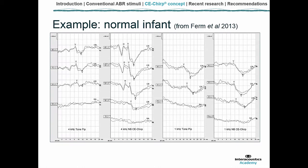Looking at what this means in actual testing: on the left panel you can see results from 4 kHz tone PIPs and 4 kHz chirps. The difference in amplitudes is immediately clear — chirp responses are considerably larger. The right panel shows 1 kHz results, which are very similar. One other thing to note is the latency of the wave 5 response: at 45 dB NHL, wave 5 for the tone PIP comes in at about 12 milliseconds.